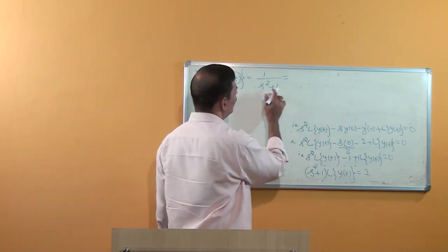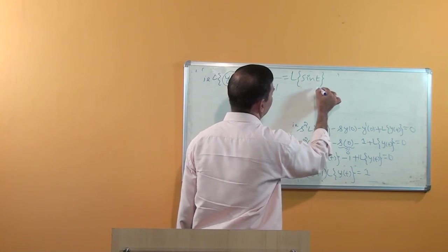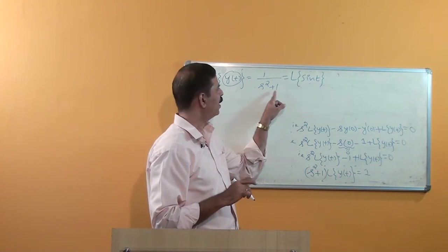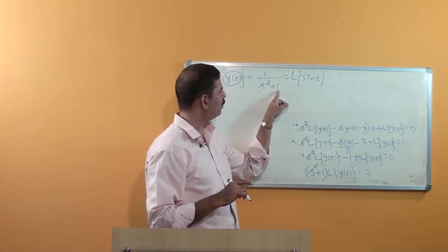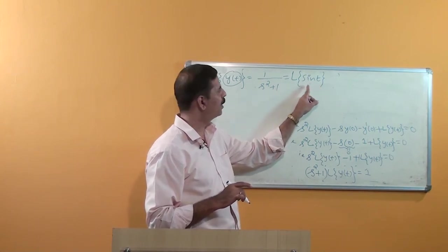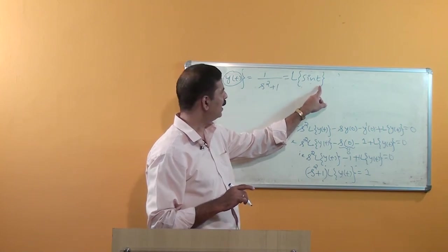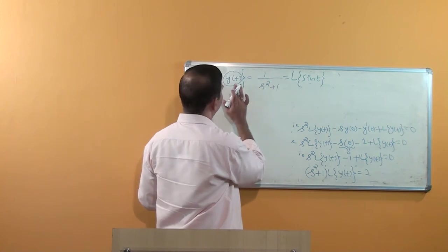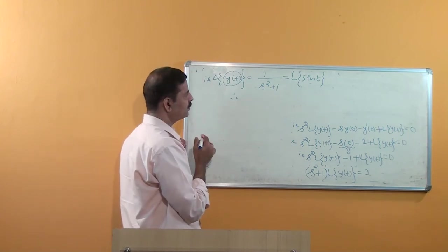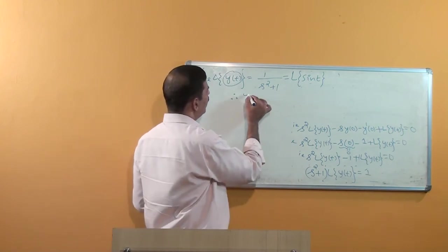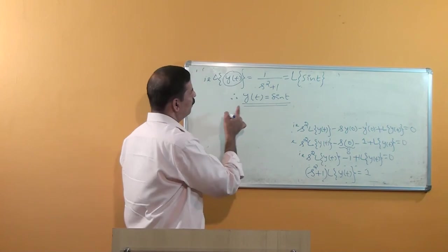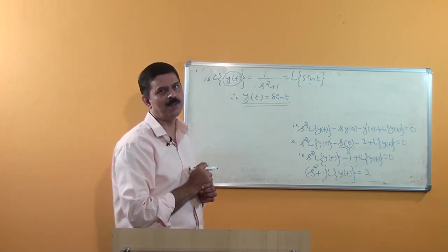We can write this equivalently as sin(t). You know that Laplace of sin(kt) equals k divided by s² + k². Here k = 1, so 1/(s² + 1) corresponds to sin(t). Therefore, Laplace of y(t) equals Laplace of sin(t), and directly we conclude y(t) = sin(t).